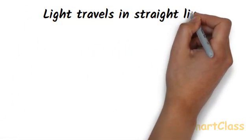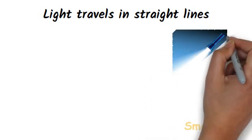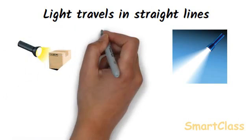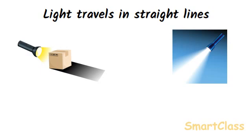Light travels in straight lines. If we light a torch on a dark night, we will see that the beam of light produced by the torch travels straight into the darkness. This shows that light travels in straight lines. If we place an object in the path of light, a shadow is formed behind the object. The formation of a shadow also suggests that light travels in straight lines, because if light could bend and travel in curved lines, it would have reached behind the object and no shadow could have been formed. The fact that we cannot see around a corner also shows that light travels in straight lines.